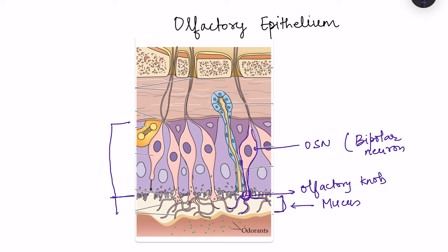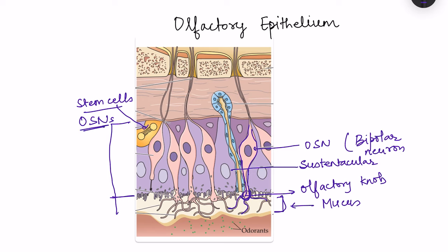Other cell types include supporting cells, also known as sustentacular cells, and stem cells. Stem cells are responsible for proliferation and formation of new olfactory sensory neurons. These neurons actually regenerate — their lifespan is approximately one to two months, and when they die, regeneration occurs through proliferation and differentiation of these stem cells.